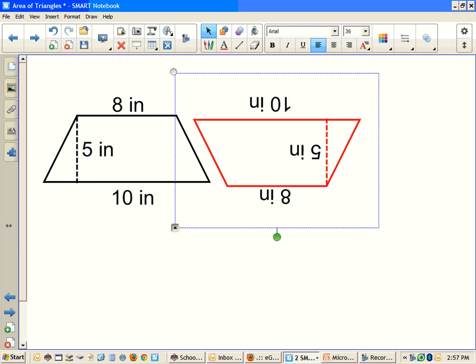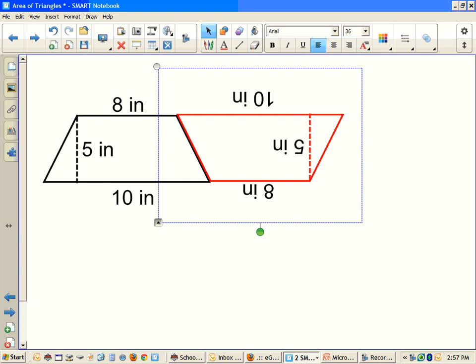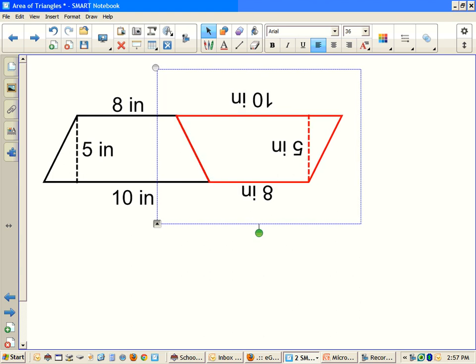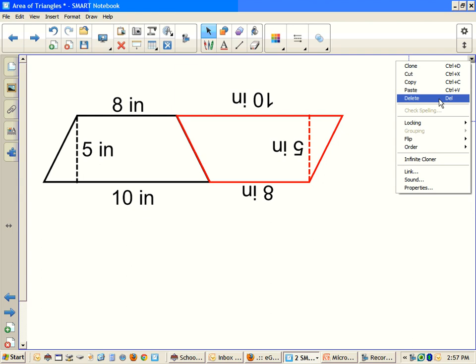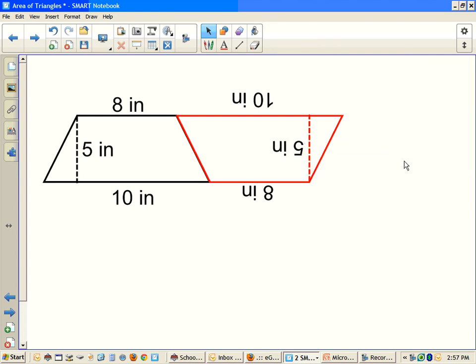And all you need to do is flip it upside down and then move it next to the other one. So the red one is my copy, the black one is my original. And then with my magic eraser, I'm going to show you magically that when you put two trapezoids together, it makes a parallelogram.